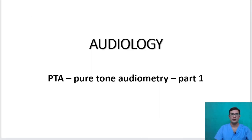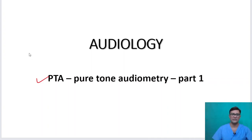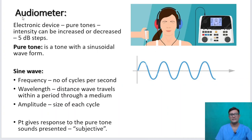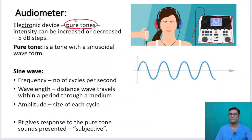Today we will be talking about pure tone audiometry, which is an important topic from the exam point of view and also from the day-to-day practice of an ENT surgeon. An audiometer is an electronic device which is capable of producing pure tones. We produce these pure tones because we can standardize the sound that is presented to the patient's ears.